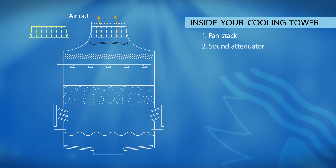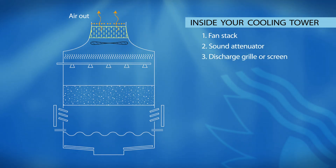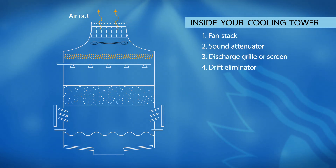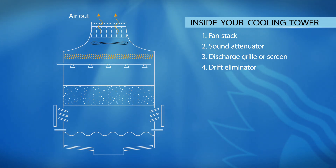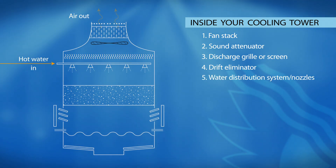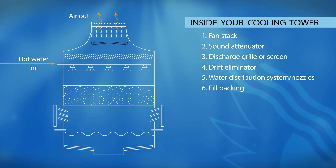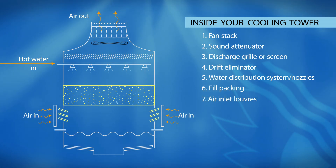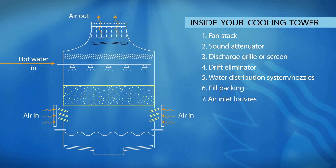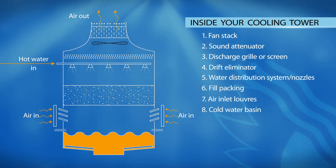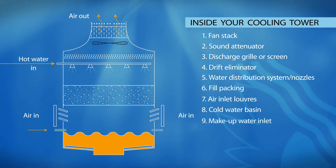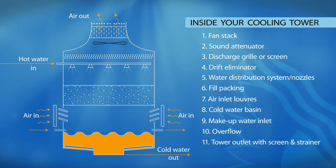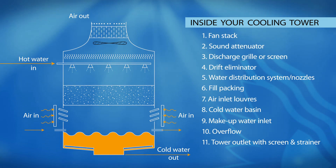They include a fan, sound attenuation, and discharge grill or screen. The drift eliminator reduces the number of water droplets that leave the tower trapped in the tower discharge air. The tower also features a water distribution system where hot water comes from the process or building and is sprayed over the fill where evaporation takes place. Around the cooling tower, air inlet louvers allow cold, dry air to flow over and through the wet fill. The cooled water is collected in the basin, which has a make-up water inlet and overflow outlet.